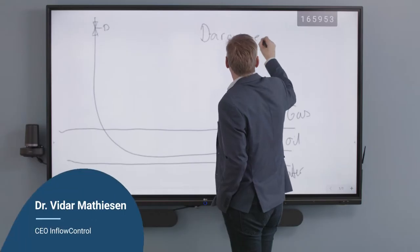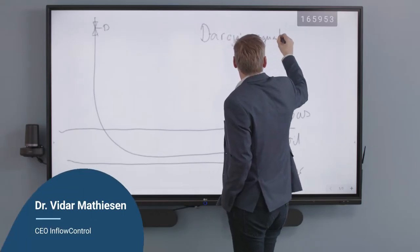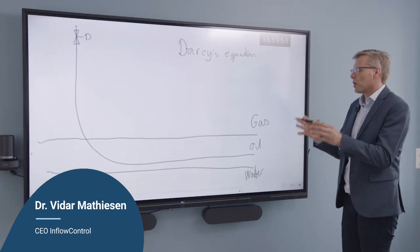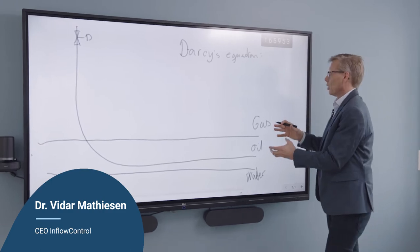We have Darcy's equation describing the flow through this porous medium. This equation is important because it's describing why we have this problem, why we're producing more water than oil.